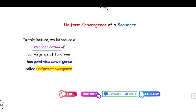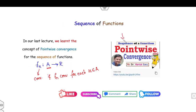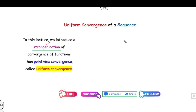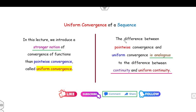Now in this lecture we will define uniform convergence, which is a stronger condition than pointwise convergence. I have already uploaded various examples on pointwise convergence — you must watch those. The basic difference between pointwise and uniform convergence is similar to the difference between continuity and uniform continuity.